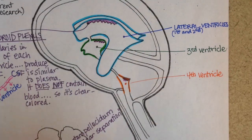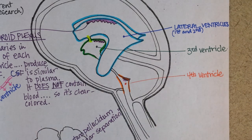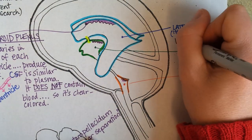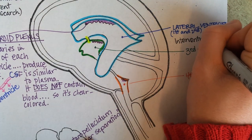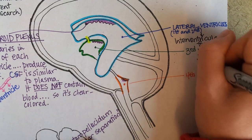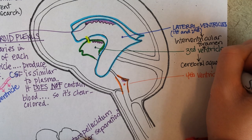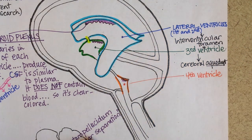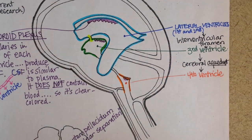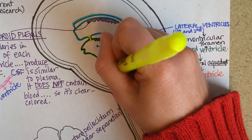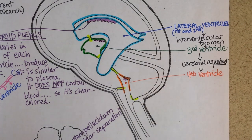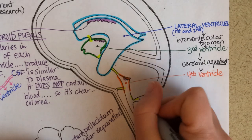So how does the fluid move? It first moves through what are called the interventricular foramina. And then from the third ventricle to the fourth ventricle via the cerebral aqueduct. An aqueduct is a channel for water, so the cerebral aqueduct is a channel for cerebrospinal fluid through the brain from the third ventricle to the fourth ventricle. You can color that in yellow. And then the cerebrospinal fluid can exit via apertures — aperture just means a window or an opening.